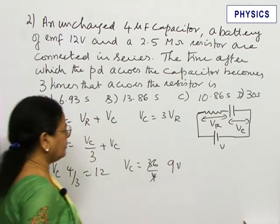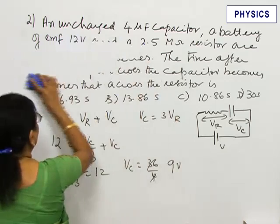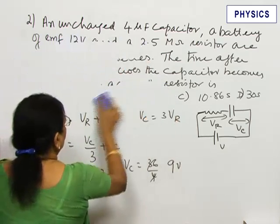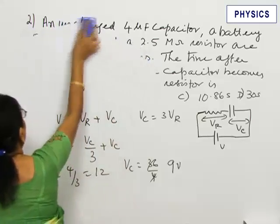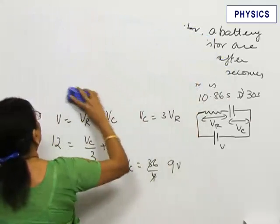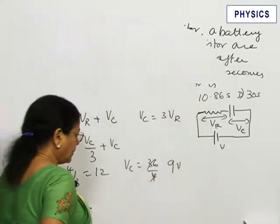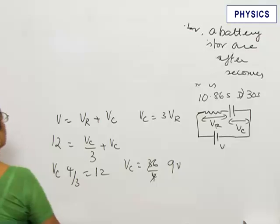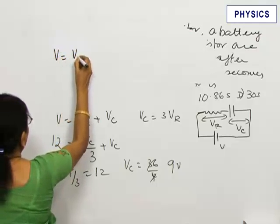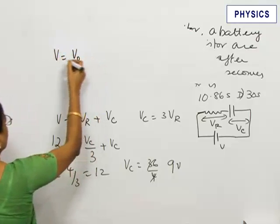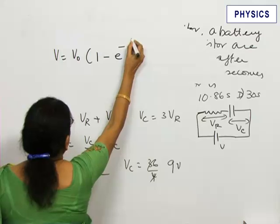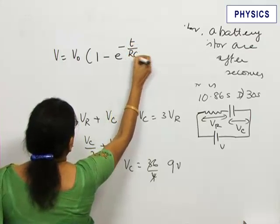We must find the time in which the potential difference across the capacitor becomes 9 volt from the initial uncharged state. When the charging current flows through the capacitor, its potential increases proportional to the charge. For charging of the capacitor, we have V equals V₀(1 - e^(-t/RC)).